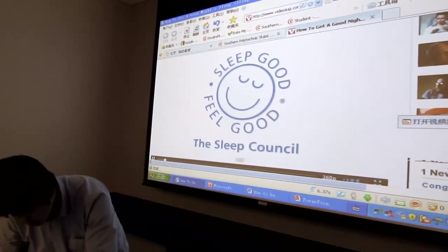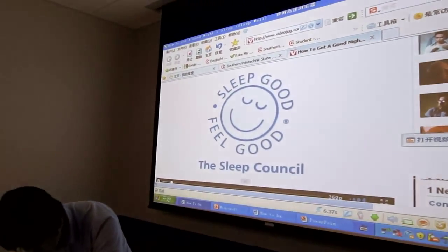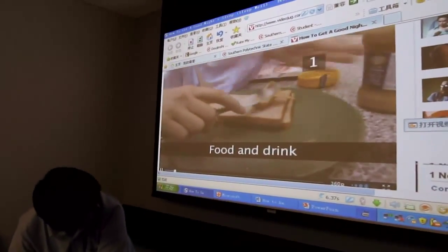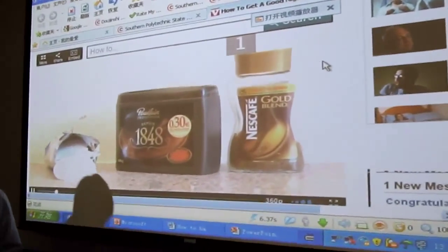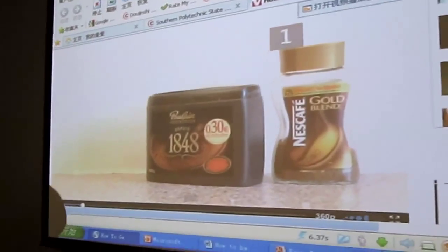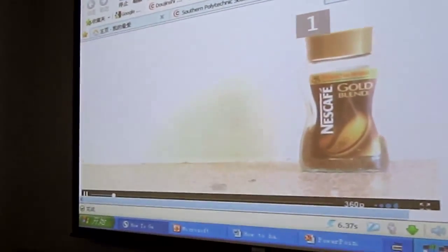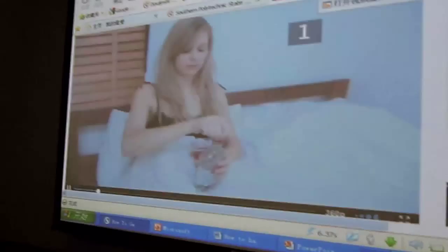VideoJug and the Sleep Council have teamed up to produce this guide to getting yourself to sleep. Step 1: Food and Drink. Avoid coffee, tea, cocoa, and cola drinks late in the evening, as they all contain caffeine, which may keep you awake.